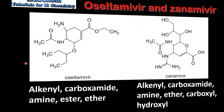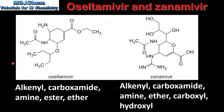Next, we'll compare the structures of the two antiviral drugs. Starting with Oseltamivir, we can see that it has an alkenyl group, a carboxamide group, an amine group, an ester group, and an ether group.